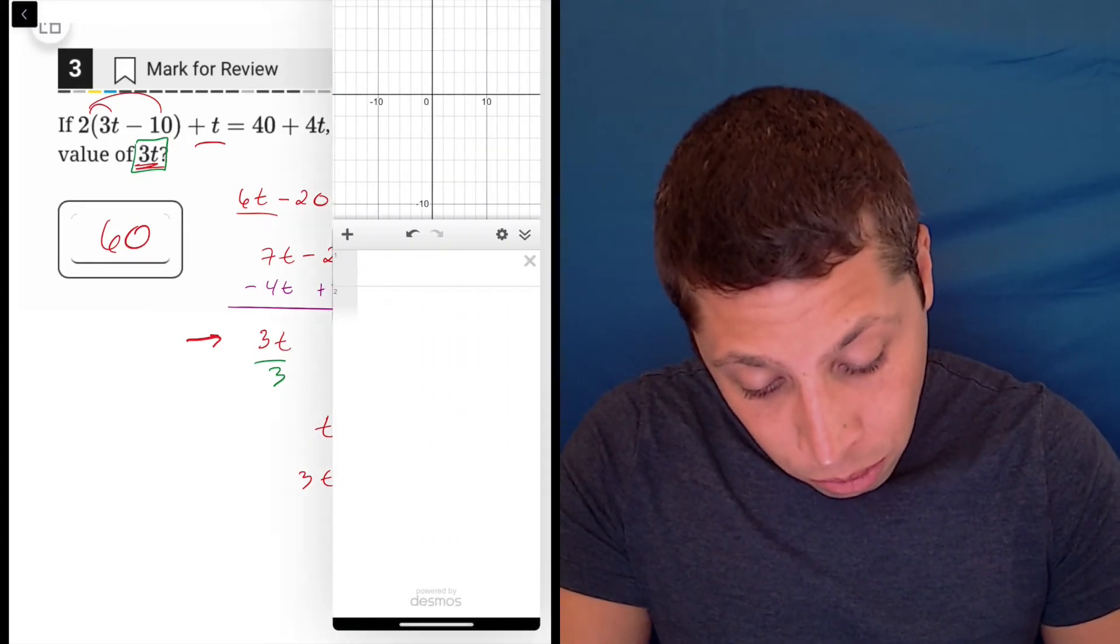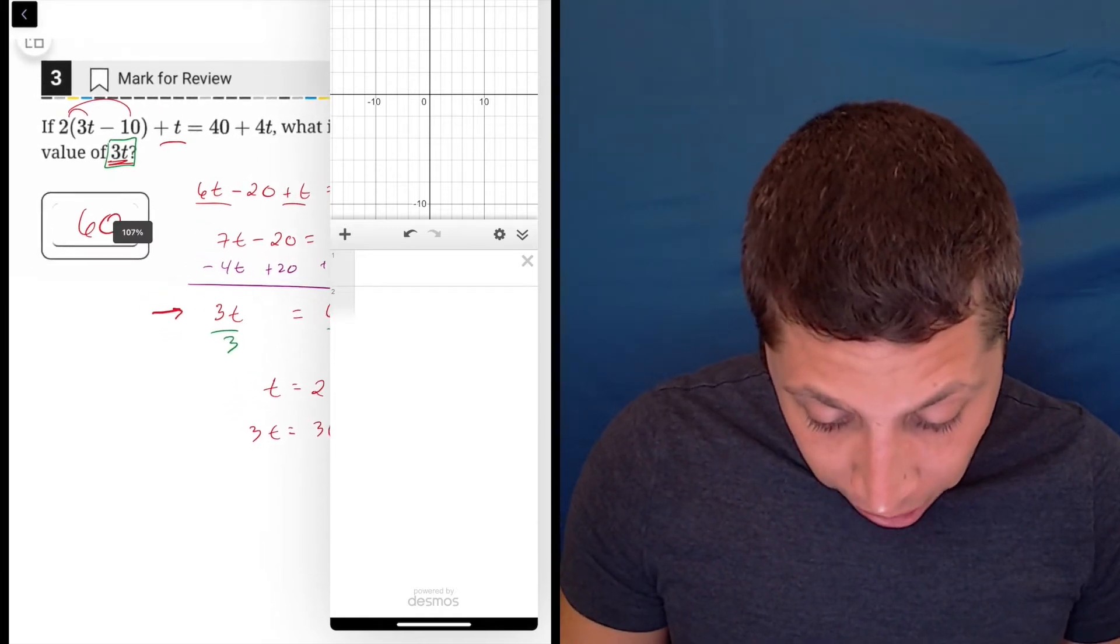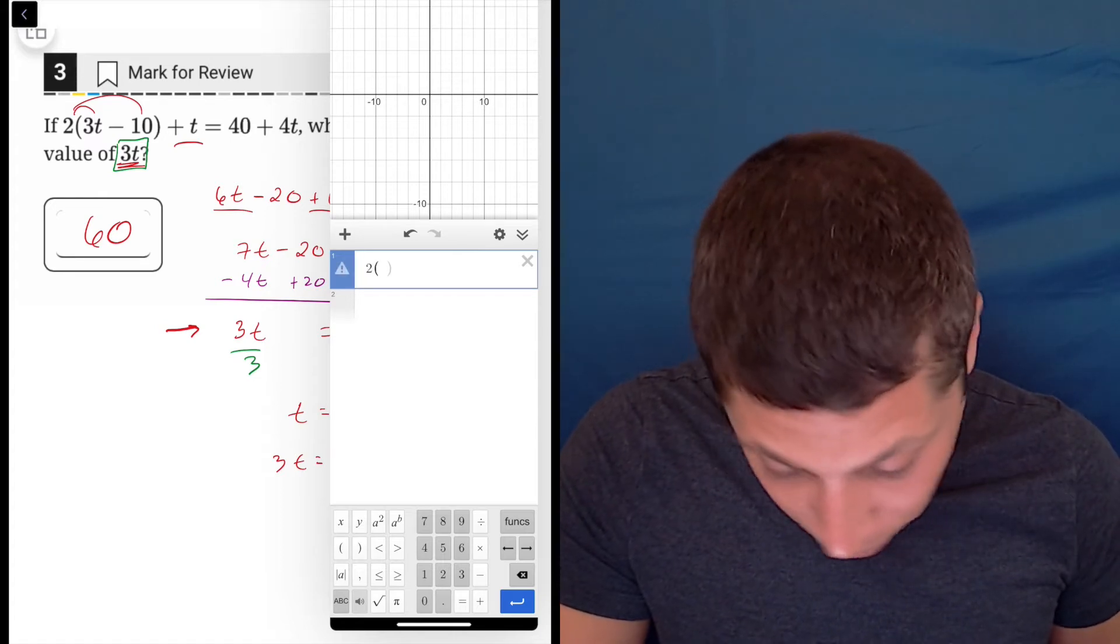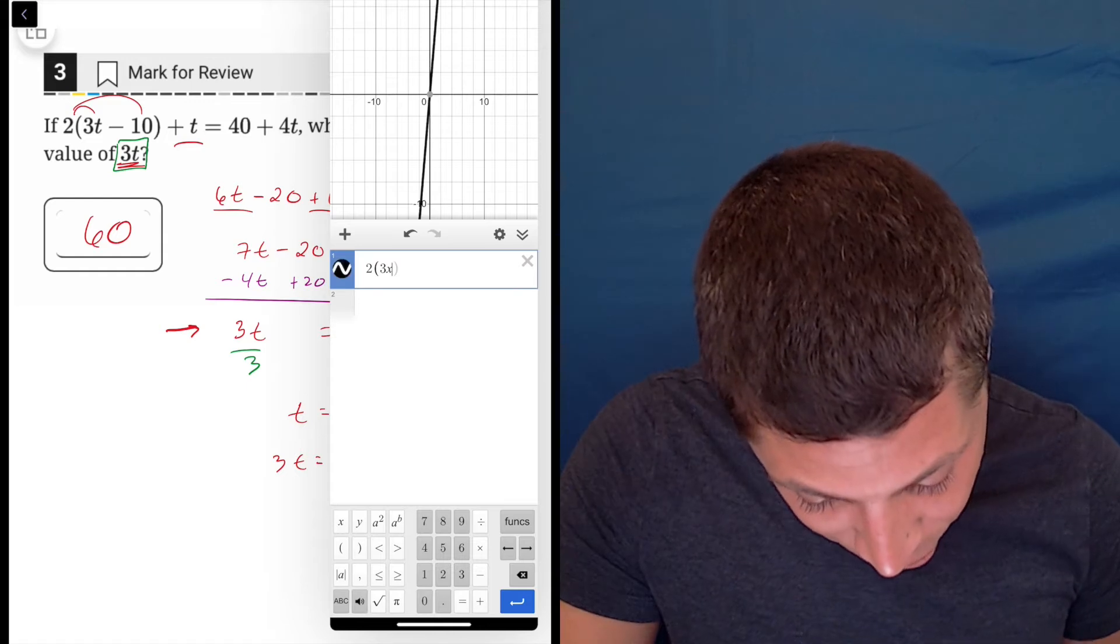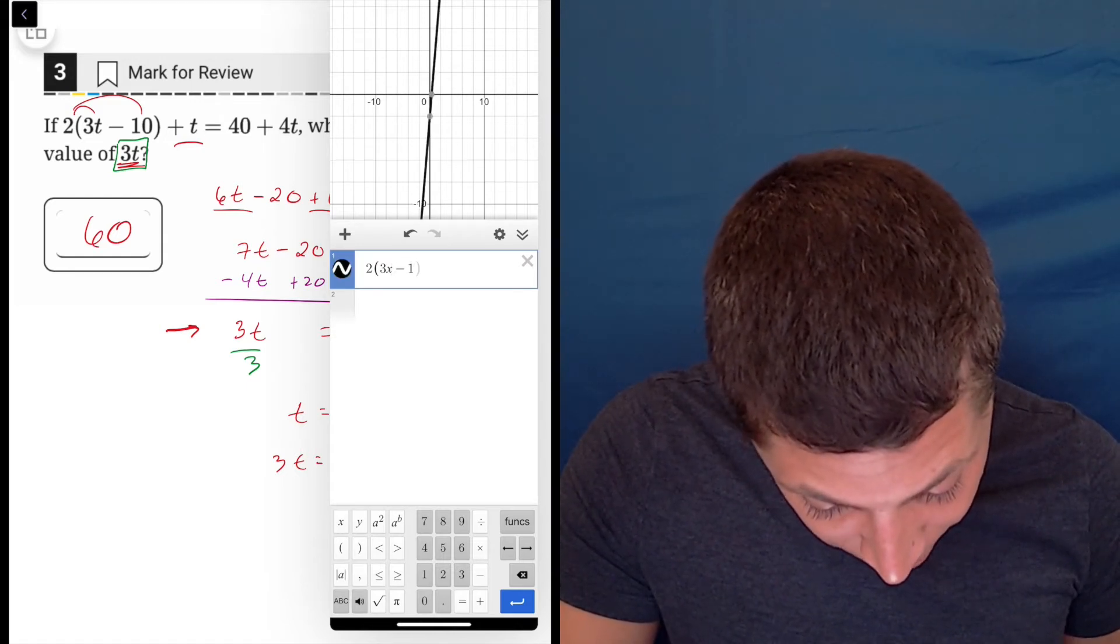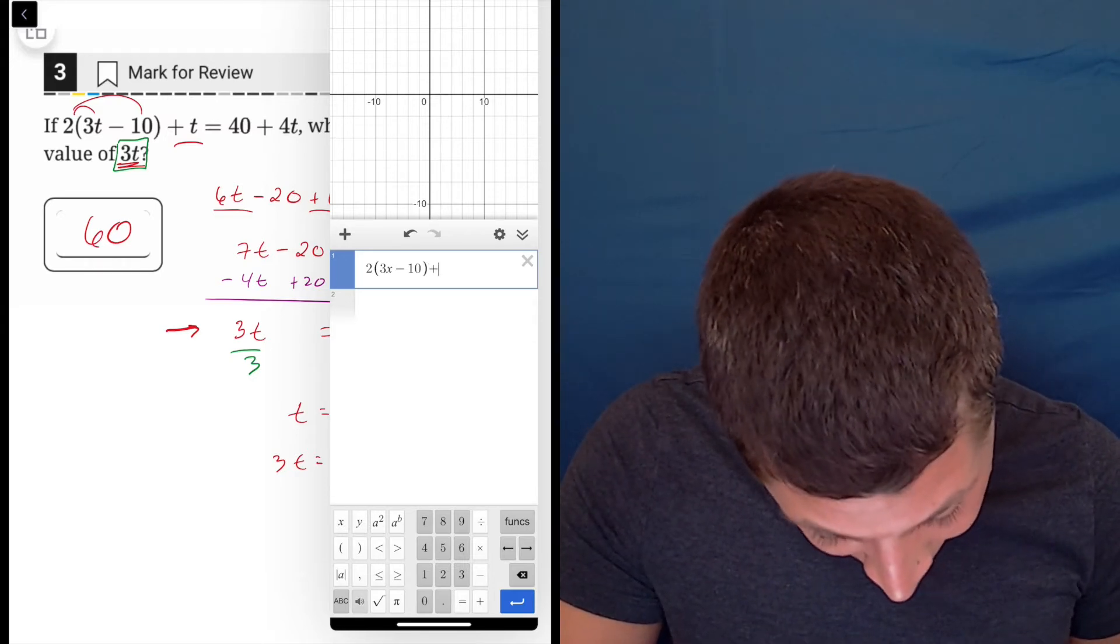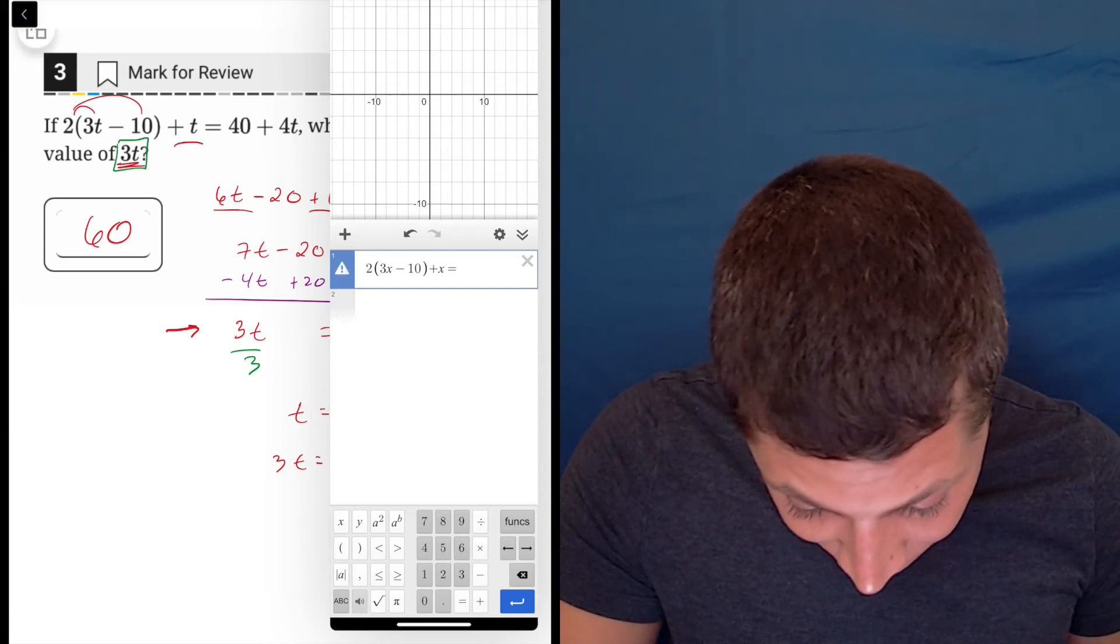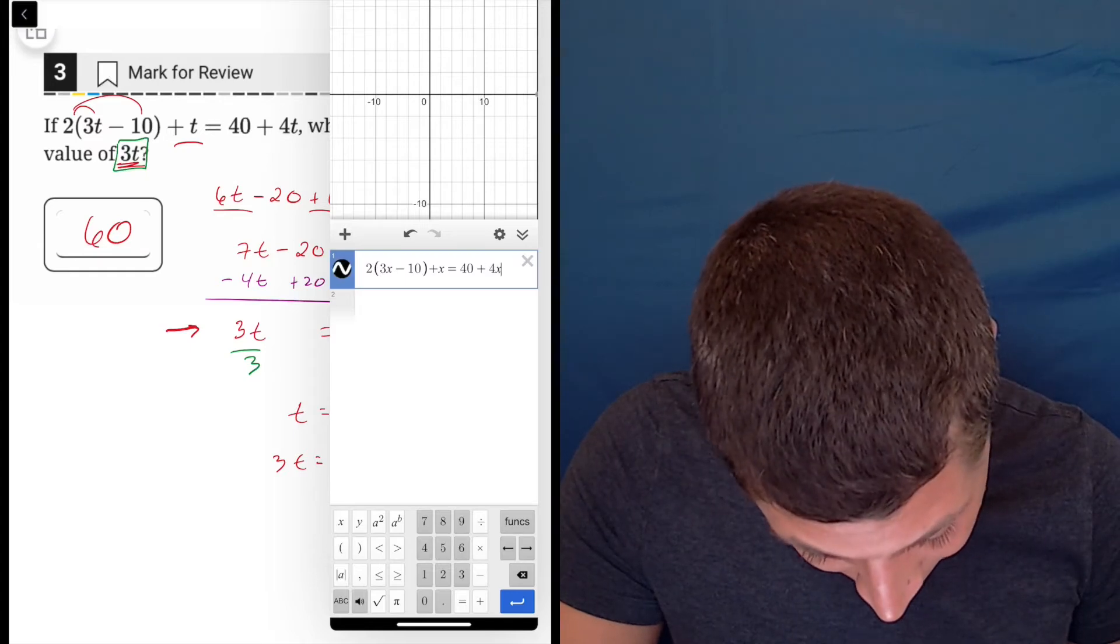Now, if I wanted to use the calculator, I could do it here. I want to show you what we would do. If you just take this equation and you enter it, you've got to be careful with all your parentheses and everything. So try to time me here. We're going to switch x for t. Is this going to be faster than the algebra to enter this? I don't know. Close those parentheses. Add the t equals 40 plus 4t.